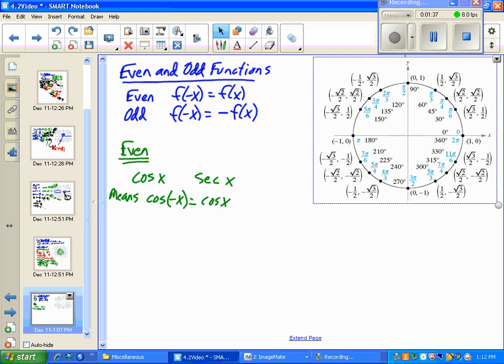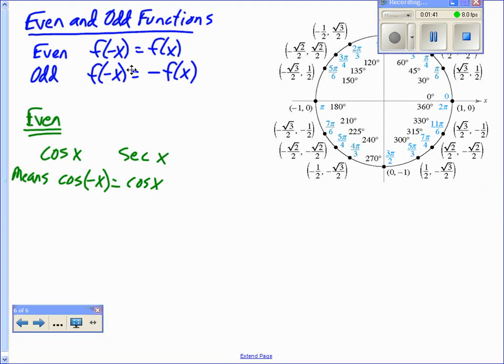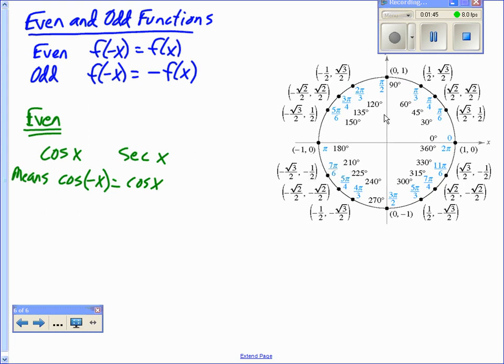Let me show you that. Let's say we're looking at this. Let me pull this up a little bit. And let's take, for instance, cosine of pi over 6.